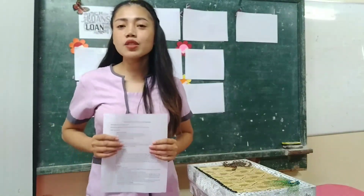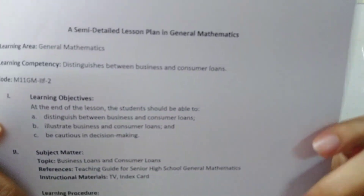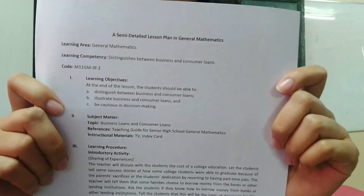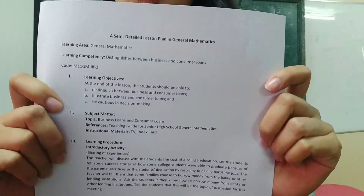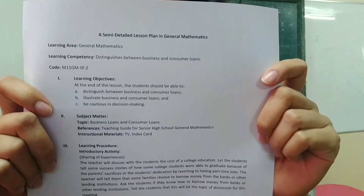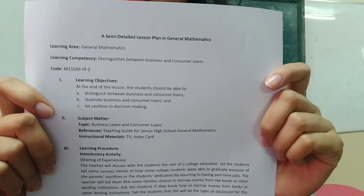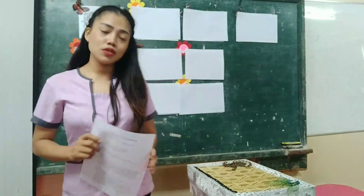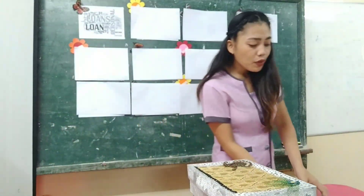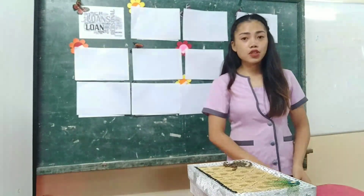Good day! I am Jessa Asi Kutin, a senior high school applicant from the division of Pohol, and this is my semi-detailed lesson plan. The learning area I have chosen is general mathematics with the learning competency: distinguishes between business loans and consumer loans. The topic is about business loans and consumer loans. I will start now with my teaching demonstration.